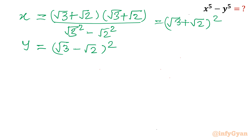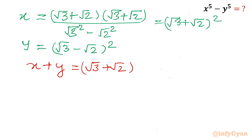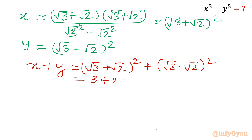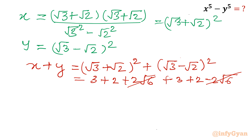Now I will calculate x + y and x − y. For x + y: (√3 + √2)² + (√3 − √2)². Expanding using (a+b)² = a² + b² + 2ab and (a−b)² = a² + b² − 2ab, the 2√6 terms cancel, giving x + y = 10.